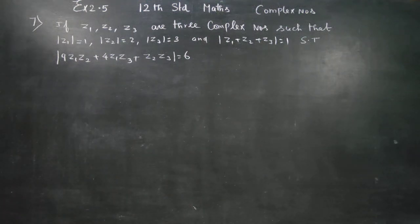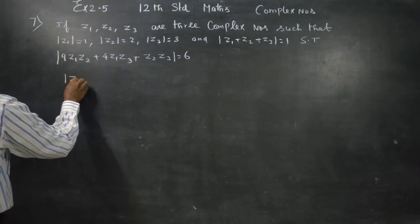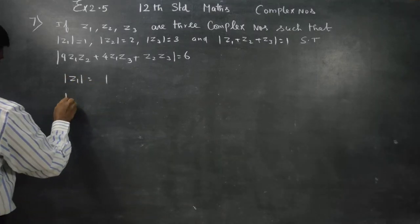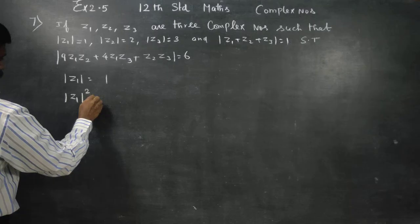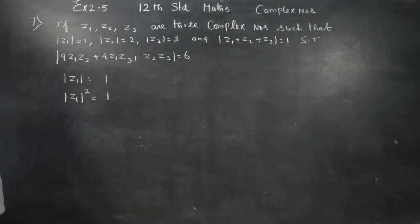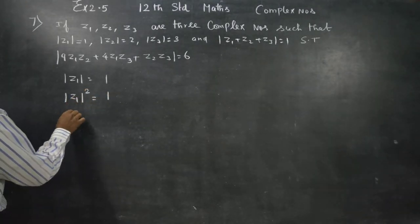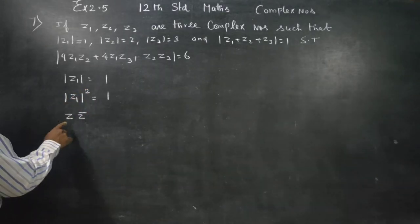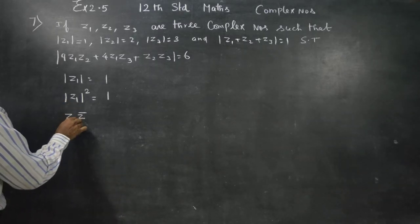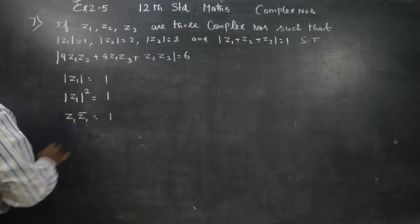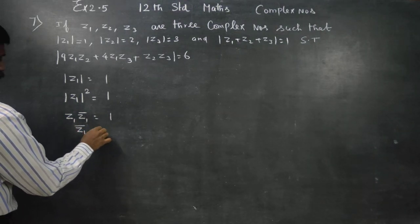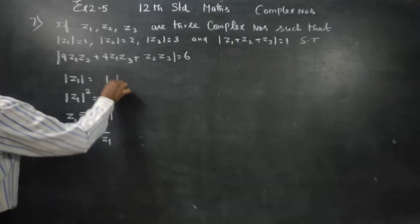Dear 12th standard students, it is given that modulus of z1 is equal to 1. Squaring both sides, modulus of z1 squared is equal to 1. Using the formula modulus of z squared equals z into z conjugate, we get z1 into z1 conjugate equals 1. Therefore, z1 conjugate is equal to 1 by z1. This is the first result.